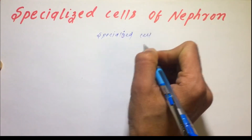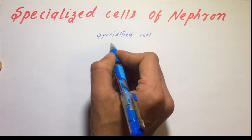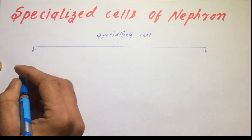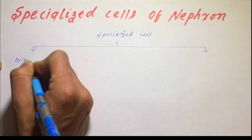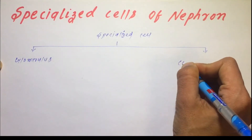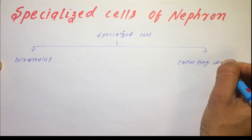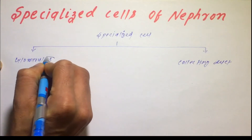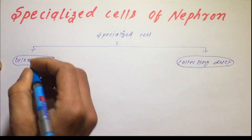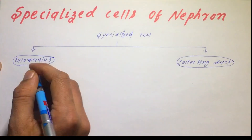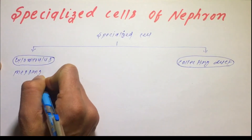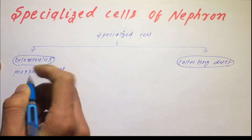This specialized cell is divided into two groups: one found in the glomerulus, and one found in the collecting duct. So the specialized cells are categorized under the glomerulus and the collecting duct.